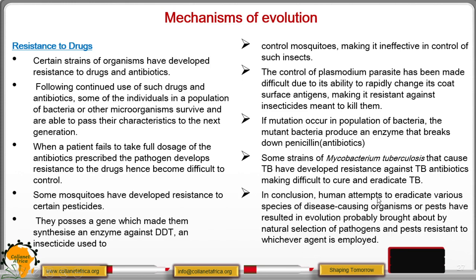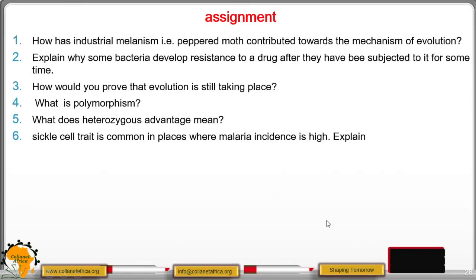In summary, human beings have attempted to eradicate various species of disease-causing microorganisms or pests, and this has resulted in evolution, probably brought about by natural selection of pathogens and pests resistant to whichever agent is employed to control them. That marks the end of evolution.